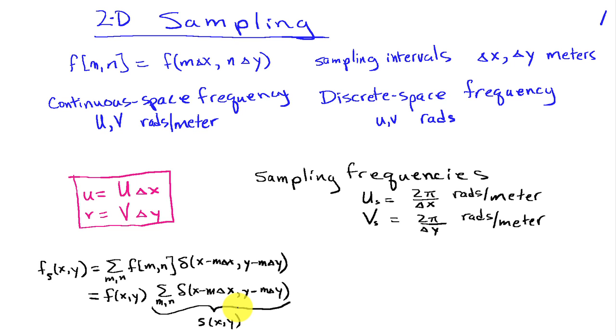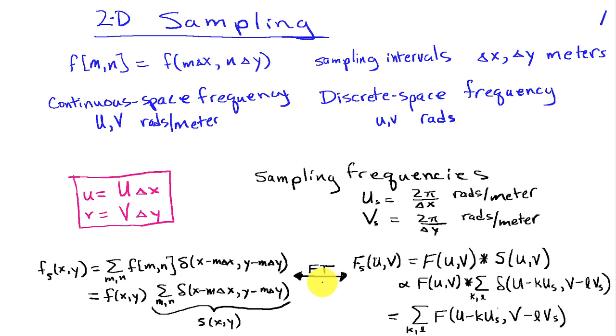This makes it straightforward to look at things in the frequency domain because we can take the Fourier transform and here on the left we have the product of f and s. So that means in Fourier space we're going to involve a convolution. I'm not going to keep track of the constants out in front here, so we're just going to say that the spectrum f sub s is proportional to the convolution of the original signal spectrum and the Fourier transform of this impulse train s of x, y.